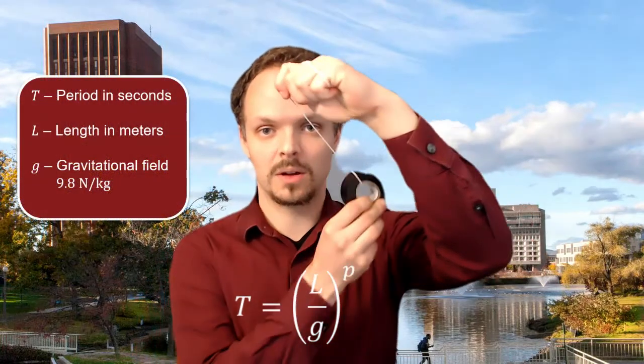Now, the basics of the relationship is that T is equal to L over G raised to some power, where again T is the period, how long it takes to go all the way down and back, measured in seconds.